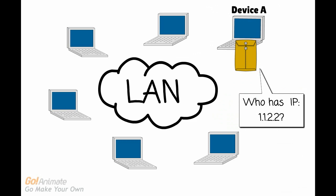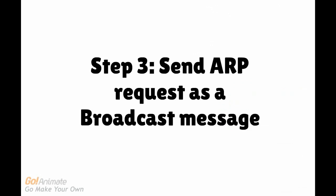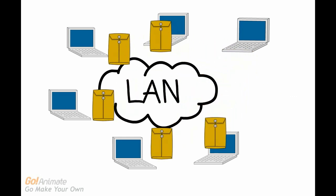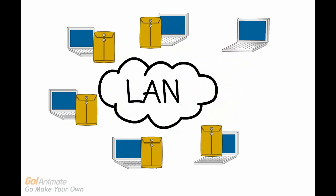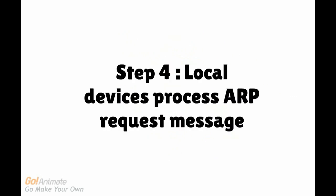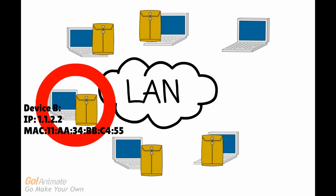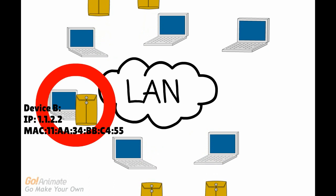This would be equivalent to device A saying, "Who has IP address 1.1.2.2?" In step 3, device A will send the ARP request message as a broadcast message — meaning it will send it to every device in the local area network. In step 4, all the local devices will process this ARP request message. Only one will process this message and realize it has this IP address; the rest will just disregard the message.